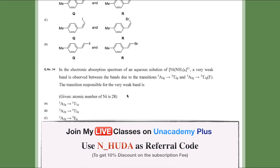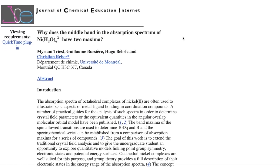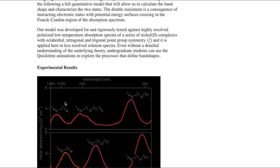To answer this I searched many research papers. I found a paper asking why there is a middle band in the absorption spectrum of Ni(H2O)6²⁺ — nickel in +2 oxidation state with water as ligand. It is shown that there are two maxima in between, and the transitions are from 3A2g→3T1g(F) and also 3A2g→1Eg.